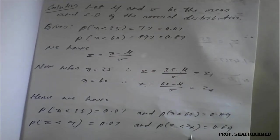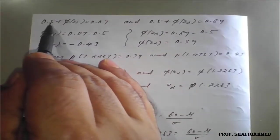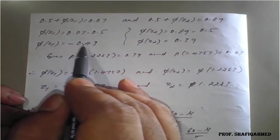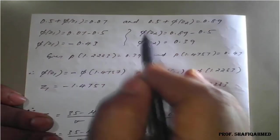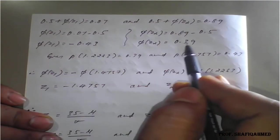So therefore, we will get 0.5 plus phi of Z2 is equal to 0.89. So we got the second expression. So shift this 0.5 to the right hand side and simplify, will get phi of Z1 is equal to minus 0.43. And similarly, the other part will become what here? Phi of Z2 is equal to 0.39.